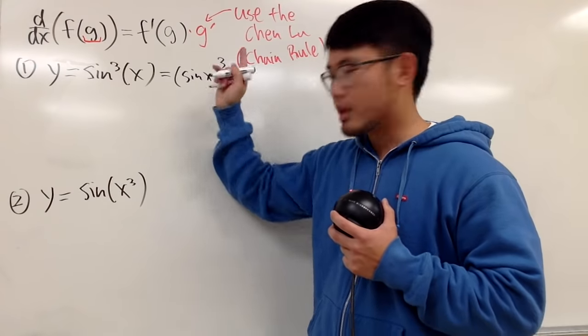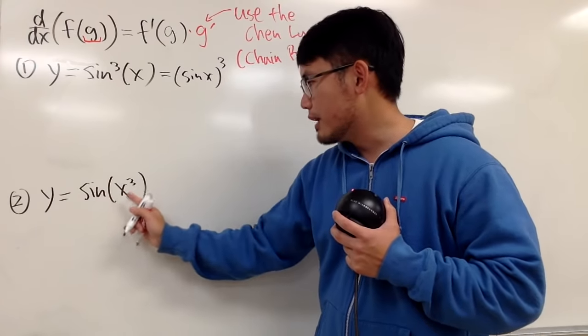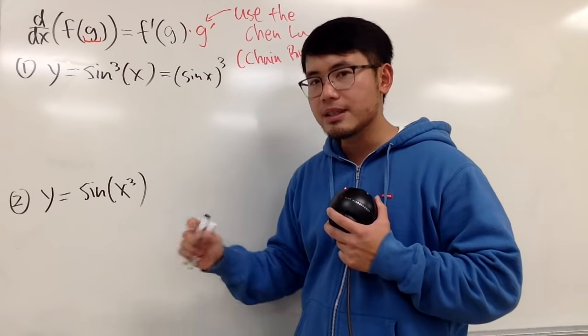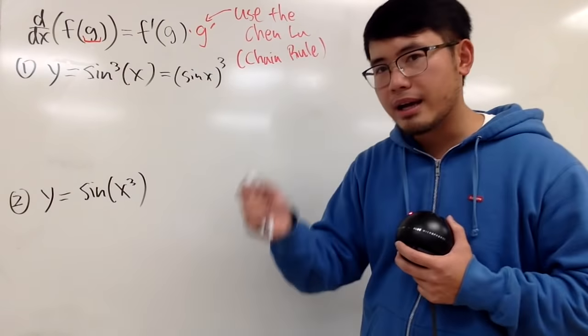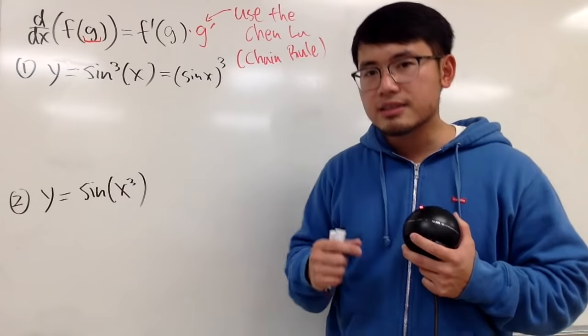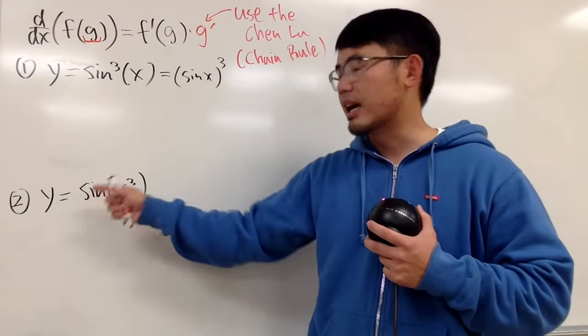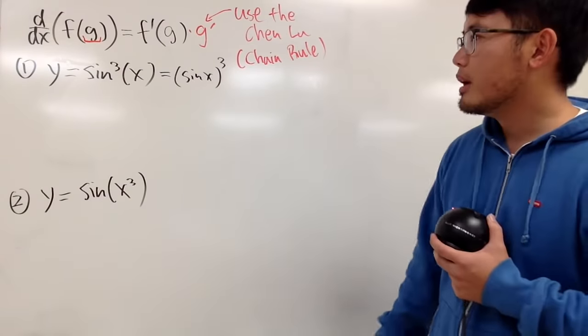When we have sin of x to the third power with parentheses like this, this means you multiply by x and then x and then x inside, and then you take the sin of that, right? So anyway, here is the box method for the chandu.